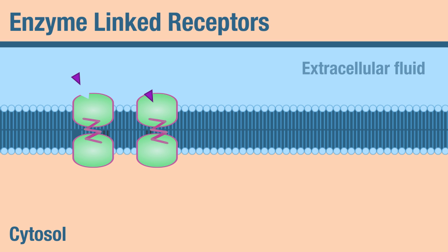Here is our image for an enzyme-linked receptor. The enzyme and the receptor are the same protein — shown here with the receptor in green and the enzyme in purple. In this image, the ligand is not bound to the receptor, so the enzyme is inactive.